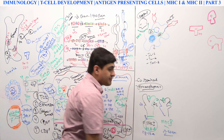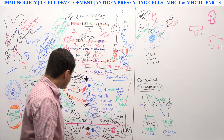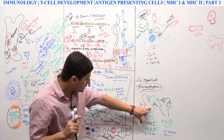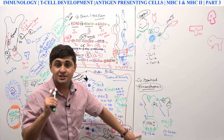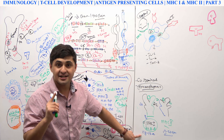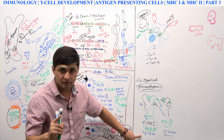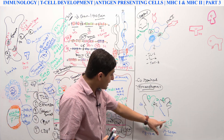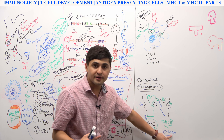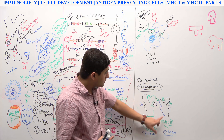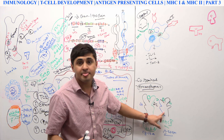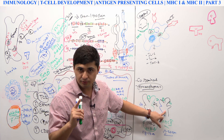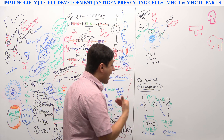If antigens are presented through MHC1, who is going to respond? The cytotoxic CD8 T cells — we also call them tumor cells because they respond to tumor cells and cancers. And MHC2, which holds 13 to 20 amino acids, will activate the CD4 helper T cells. So CD4-positive cells respond to MHC2.